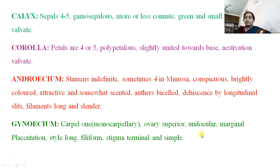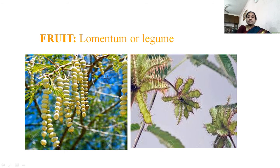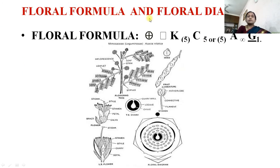Fruit is a lomentum — it is legume-like but has constrictions. Floral formula: flowers are actinomorphic, bisexual; calyx 5 united; corolla 5 united or free; androecium infinite; gynoecium with one carpel and superior ovary.